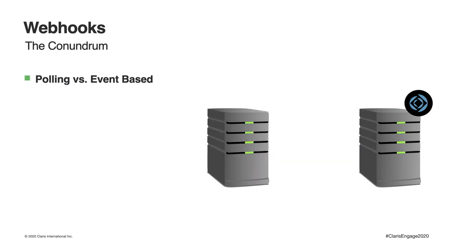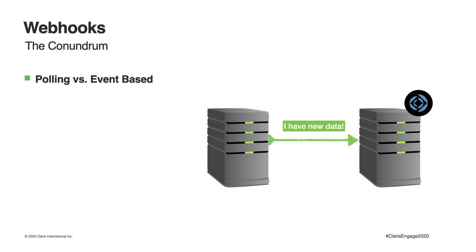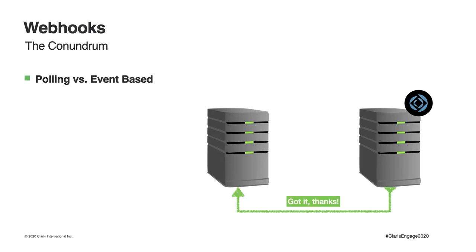Ideally, what we want is something where two systems are each doing their own thing, until an event happens on the other system. When that happens, we want the other system to push the data to our FileMaker system. And if necessary, our system can respond with an acknowledgment to say we got the data, thank you. Then both systems go back to minding their own business. In a scenario like this, there is no wasted resources, and it is completely real-time.